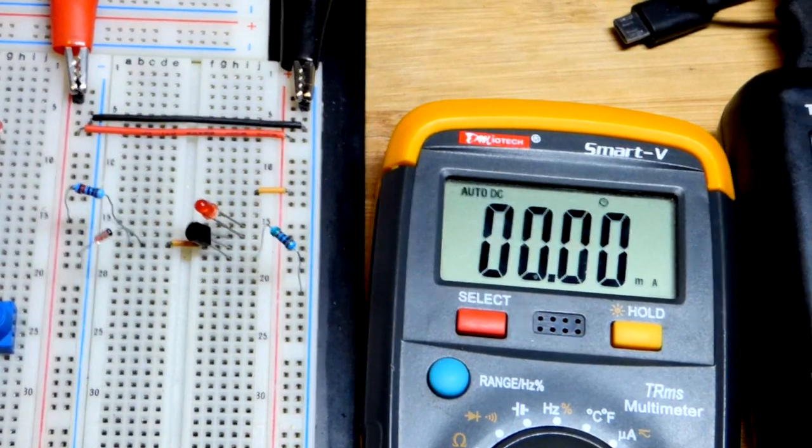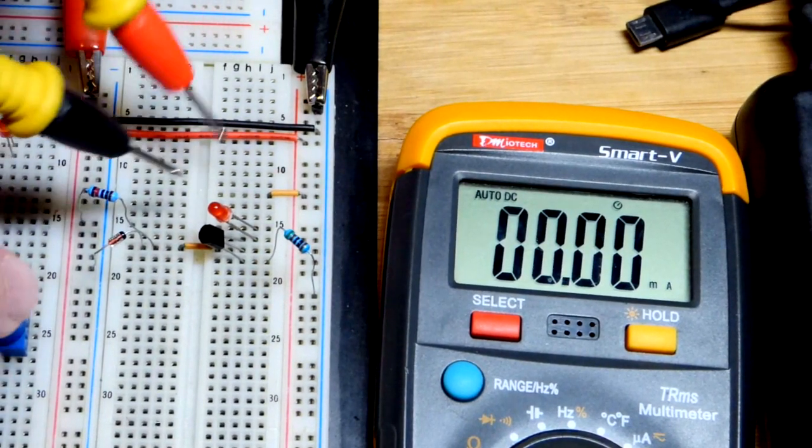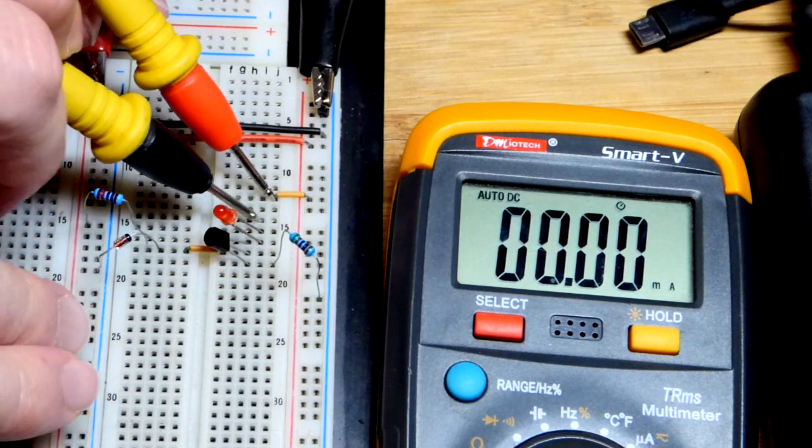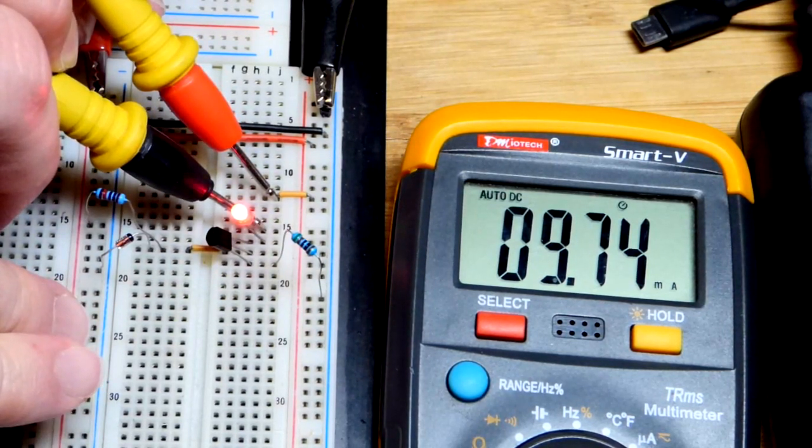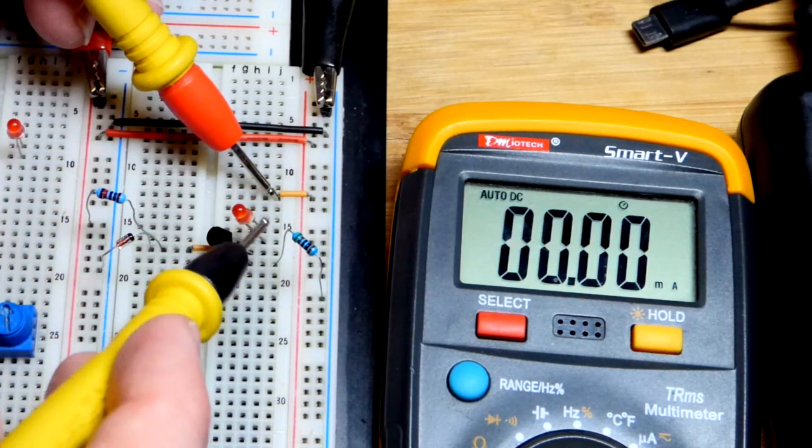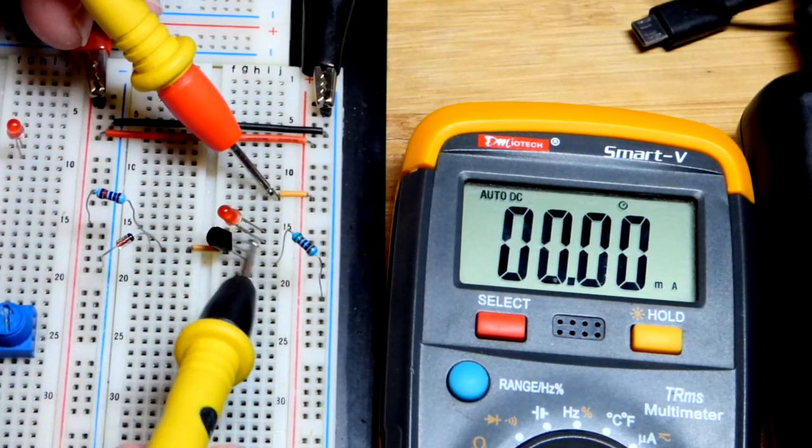We got 8 volts at the supply now, and we will measure the current by bridging the gap with the multimeter. So you can see 9.74. We expect a little less than 10 milliamps of current and that's what we got.